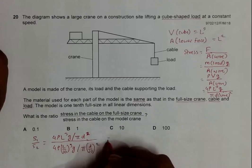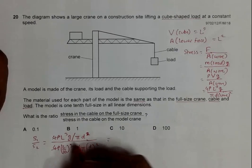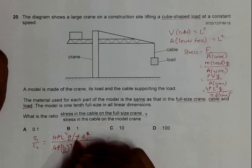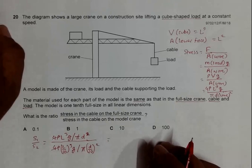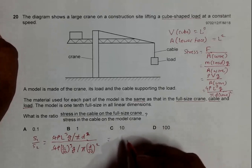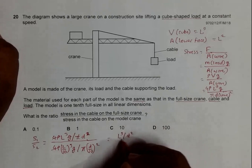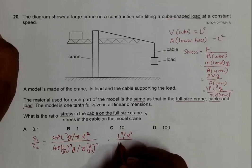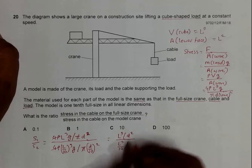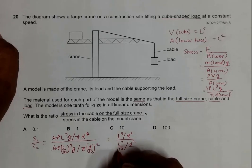g cancels, π cancels. What we have now is L³/d² divided by L³/1000 divided by d²/100.